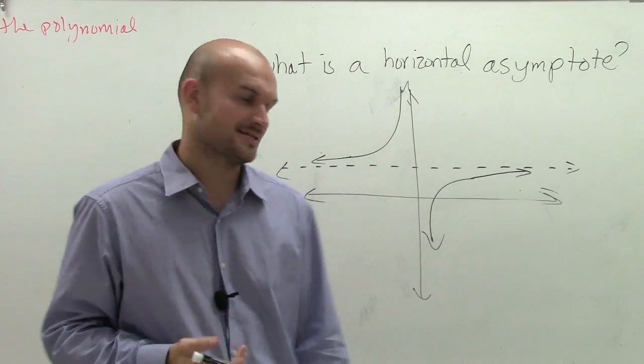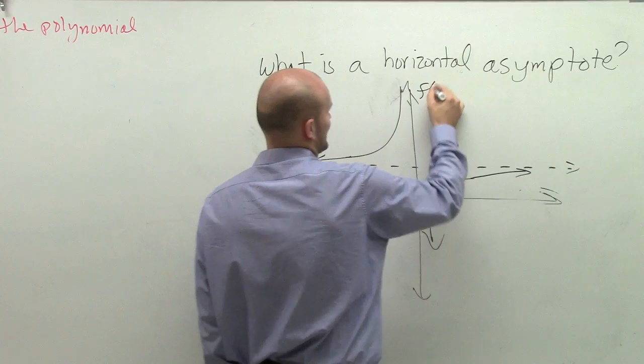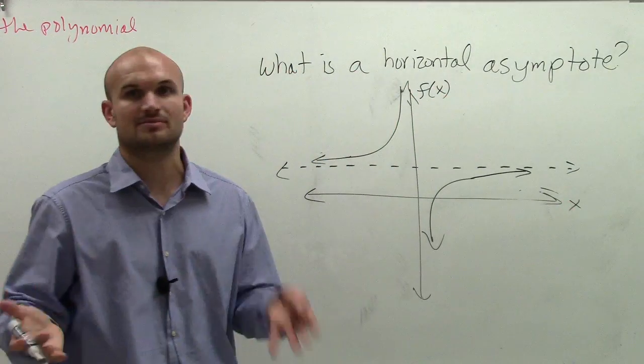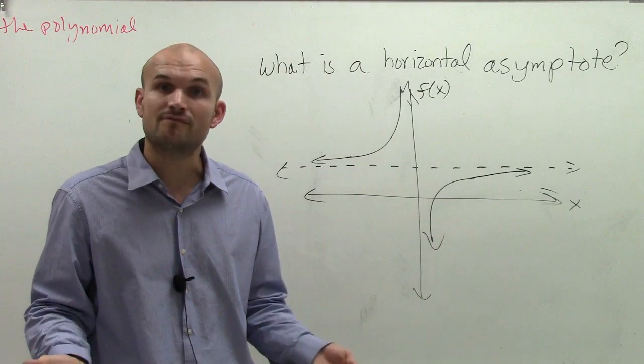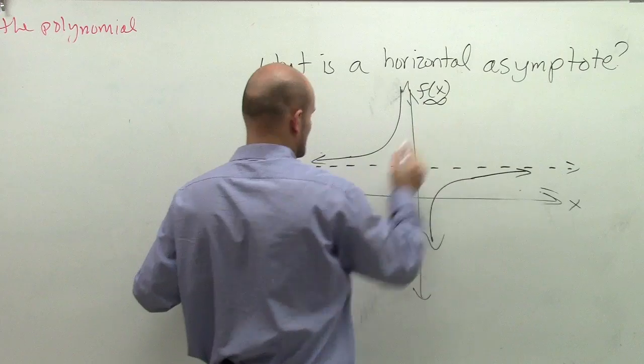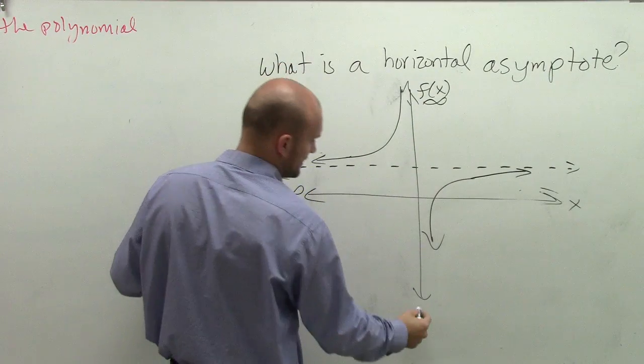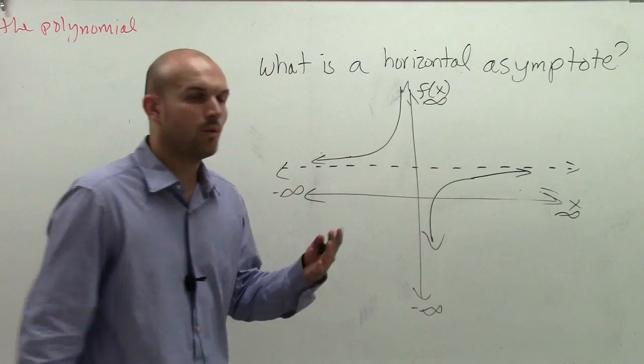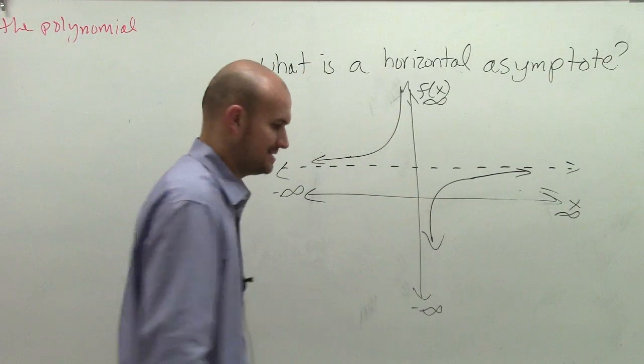first of all, we have our axes. For a function, we have f of x and x. f of x is the same thing as y, but we're talking about functions, so we use f of x. You also need to notice that there's infinity, negative infinity, negative infinity, and infinity.